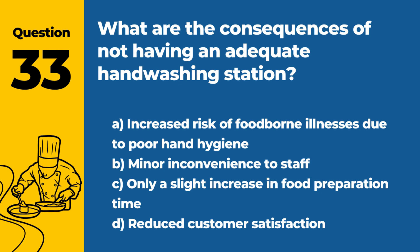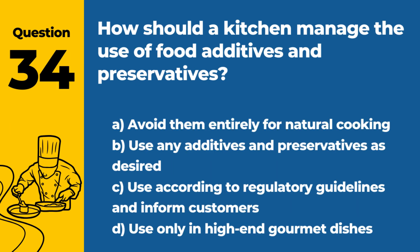Question 33: What are the consequences of not having an adequate hand-washing station? a. Increased risk of foodborne illnesses due to poor hand hygiene. b. Minor inconvenience to staff. c. Only a slight increase in food preparation time. d. Reduced customer satisfaction. Answer: a. Not having an adequate hand-washing station can lead to poor hand hygiene among staff, increasing the risk of spreading foodborne illnesses.